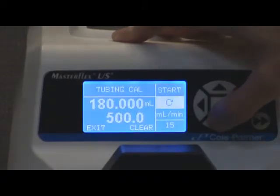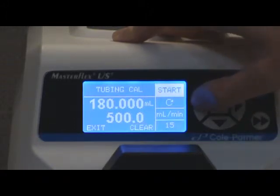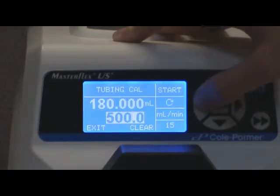Set the drive for the desired flow direction, tube size, and flow rate. It is best to calibrate your tubing at the flow rate that you will be using in your application. This will ensure optimum accuracy when pumping. The calibration volume is fixed and cannot be changed.